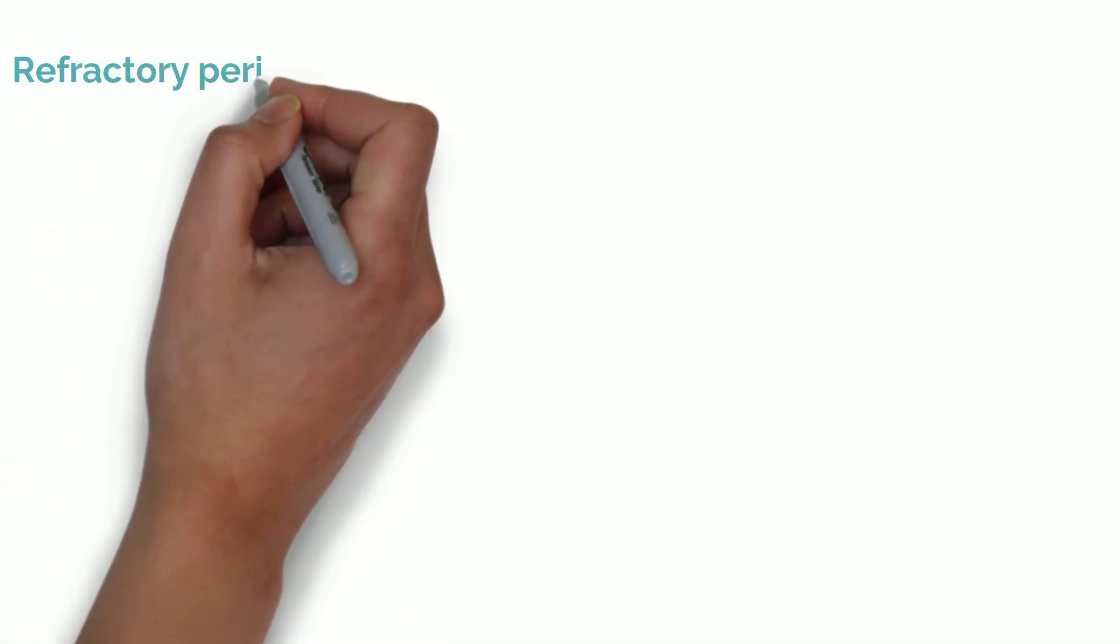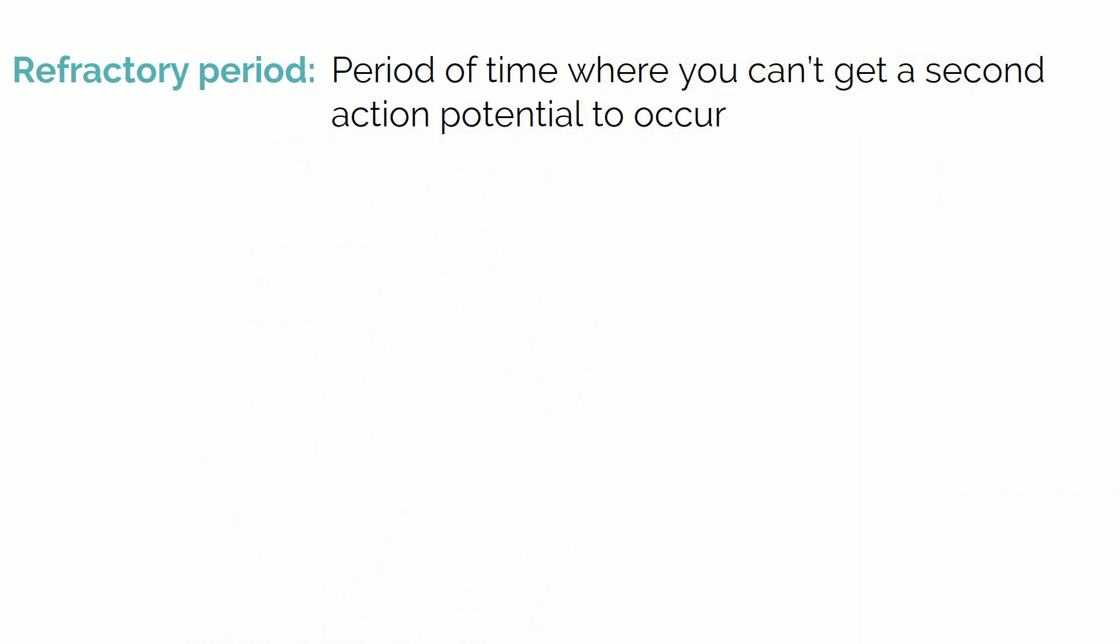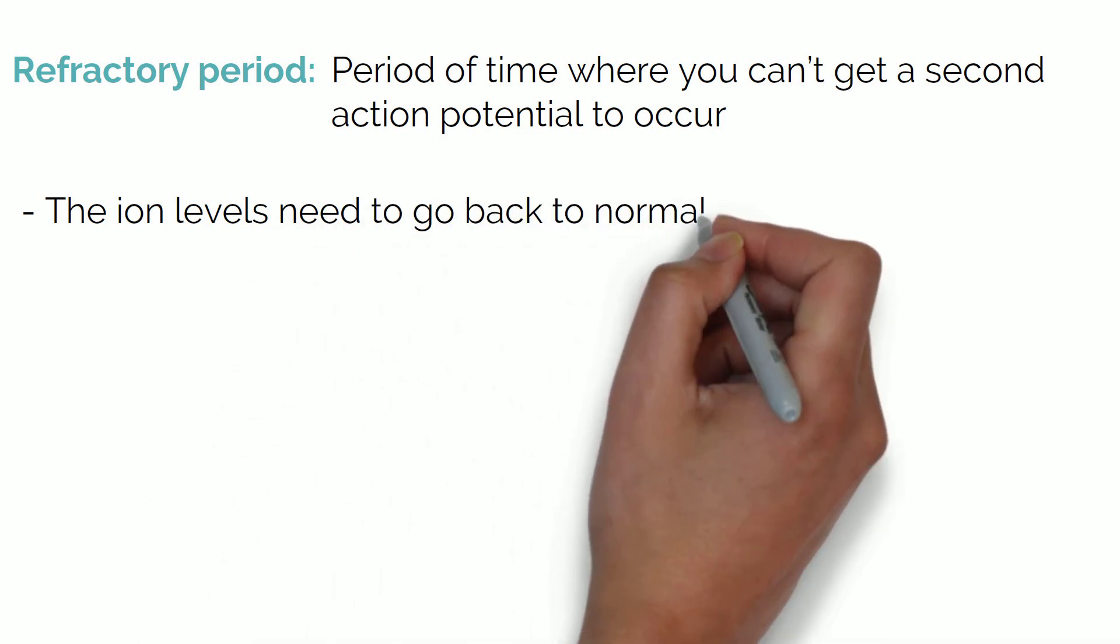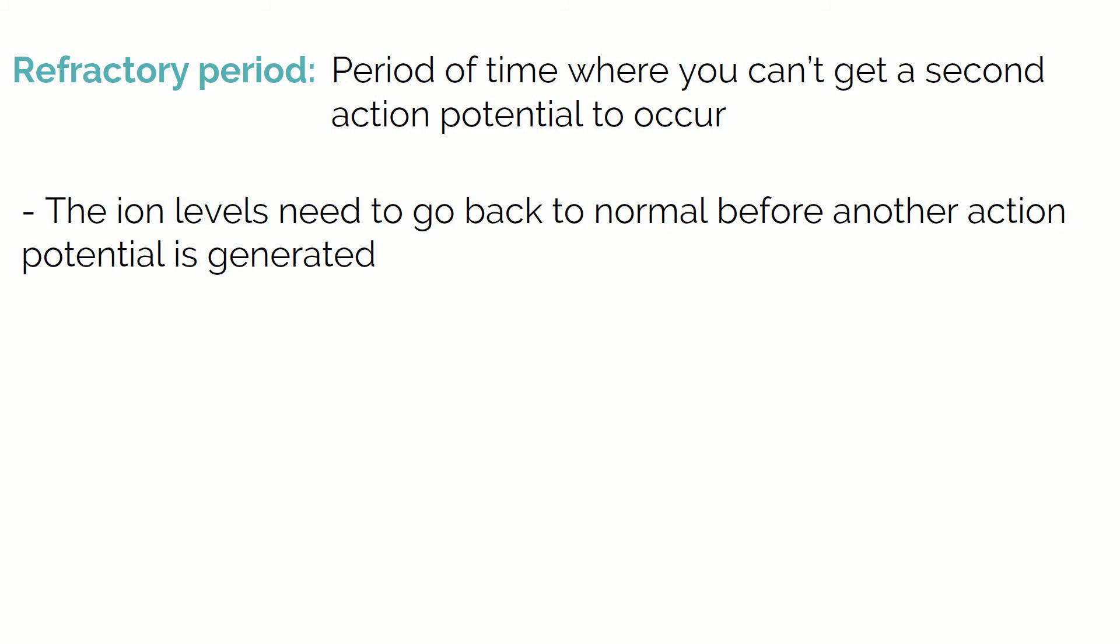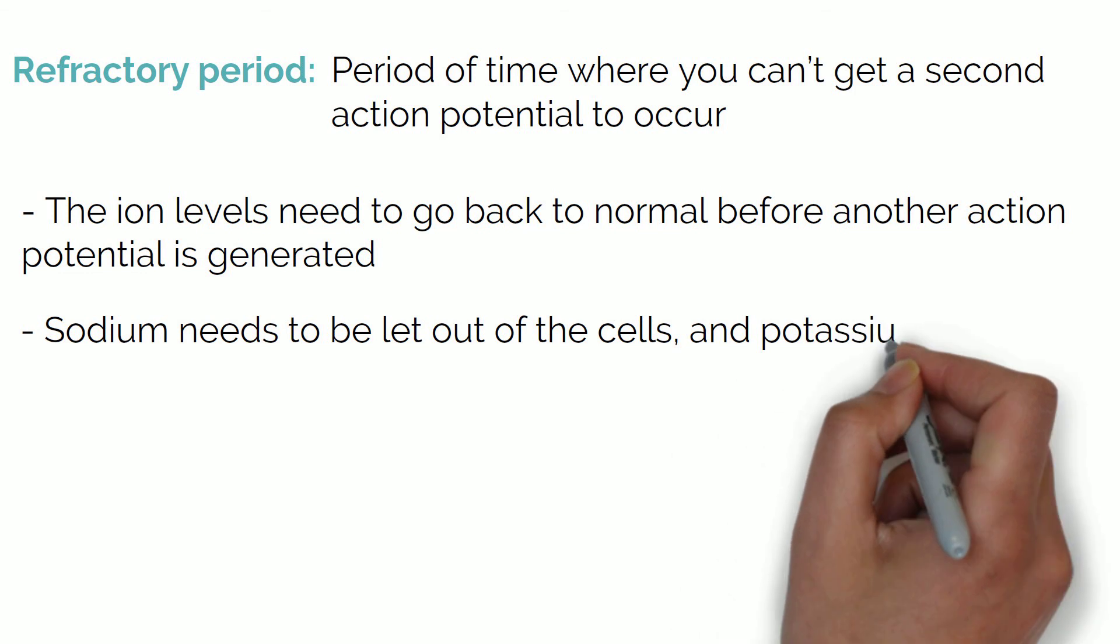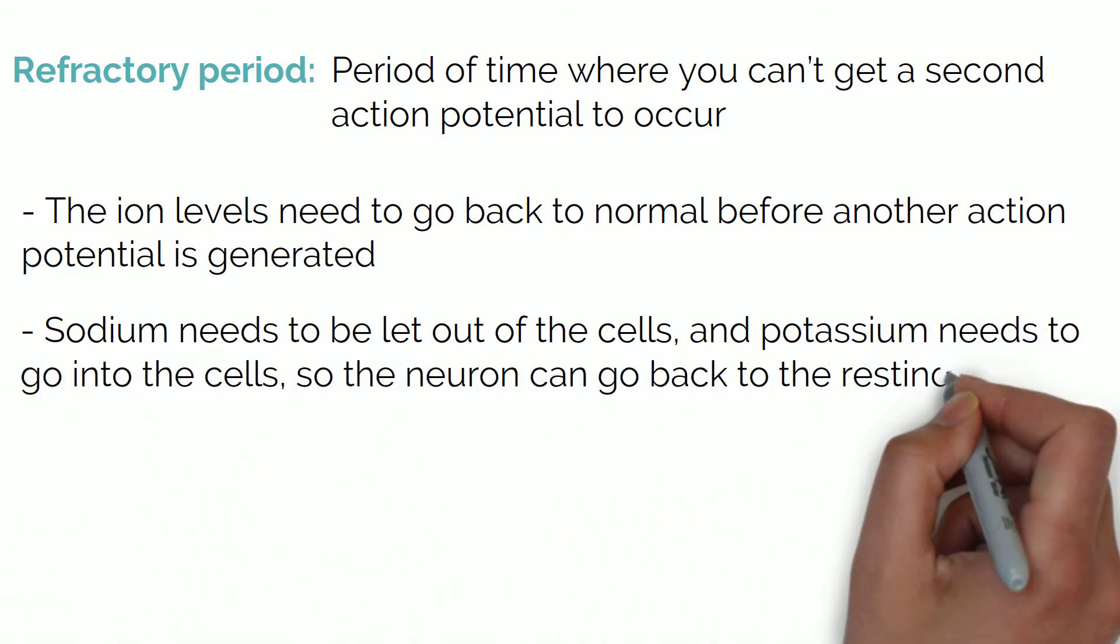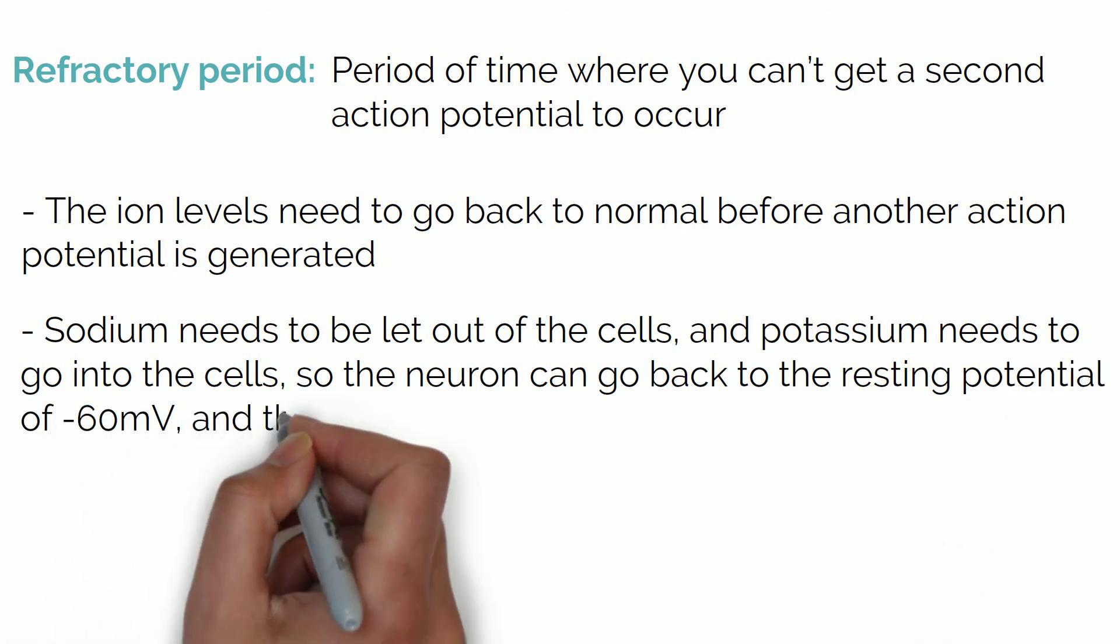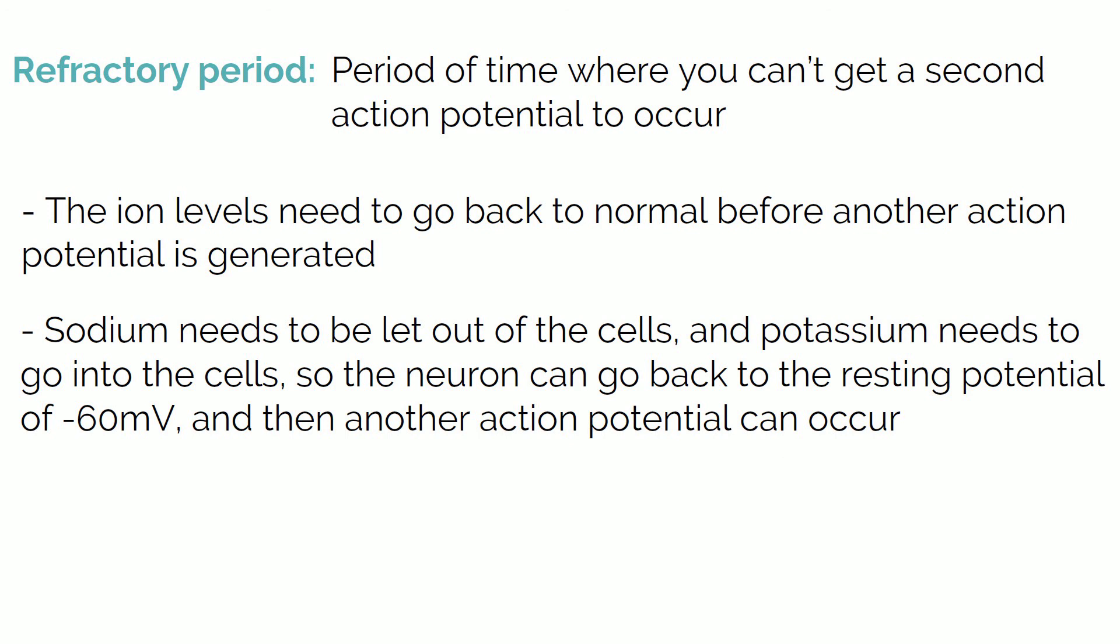Another concept you should know about is the refractory period. After an impulse, there is a period of time where you can't get a second action potential to occur because the ion levels are all over the place and they basically need to go back to normal before another action potential is generated. So sodium needs to be let out of the cells and potassium needs to go into the cells so the neuron can go back to the resting potential of minus 60 millivolts, and then another action potential can occur.